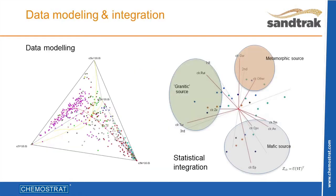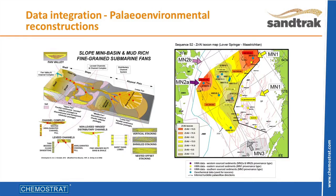One of the key components of SandTrack is the ability to graphically and statistically model and integrate different provenance data to provide a comprehensive provenance model and to assess its impact on reservoir quality. The SandTrack workflow culminates in the mapping, in GIS, of the combined sand and silt provenance model for the entire depositional system.